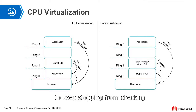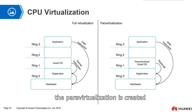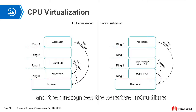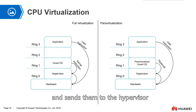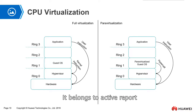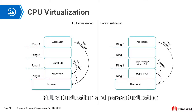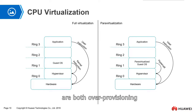It is very uncomfortable to keep stopping to check your driver's license on the highway. Therefore, paravirtualization was created. In paravirtualization, the guest OS knows that it is running in a virtual machine, recognizes the sensitive instructions, and actively sends them to the hypervisor for execution. It belongs to active reporting, so the hypervisor only needs to wait. Both full virtualization and paravirtualization are software-based over-provisioning solutions.